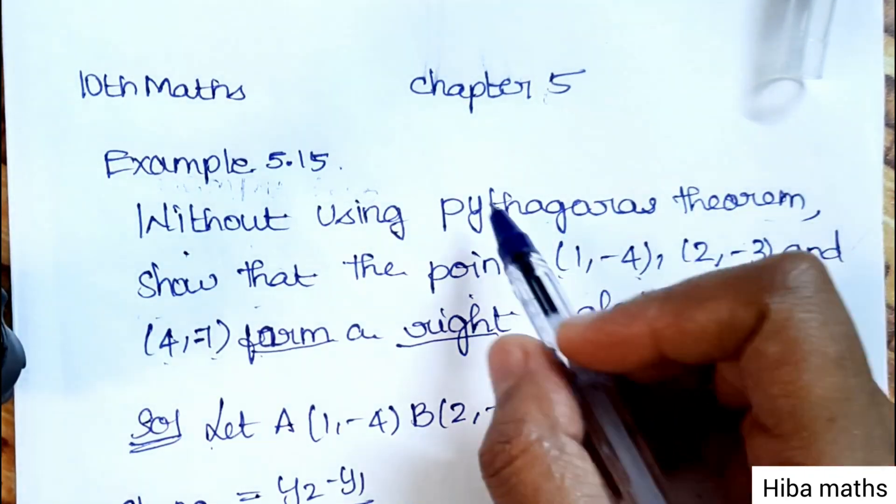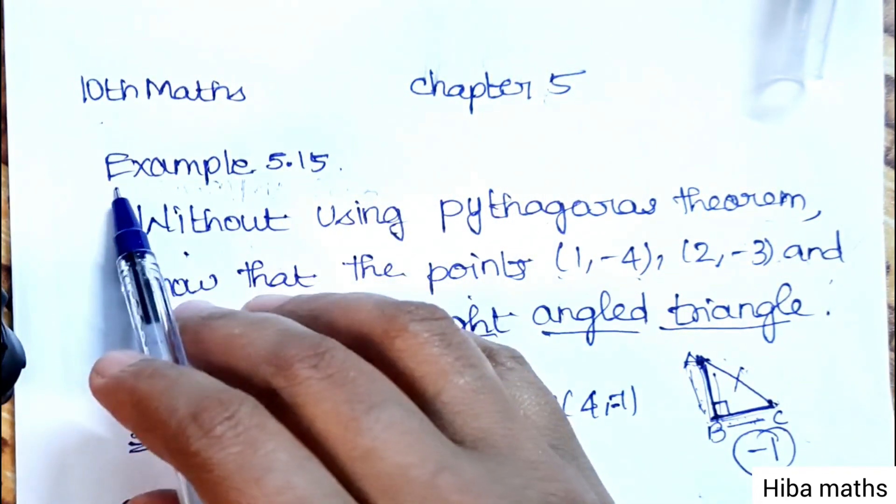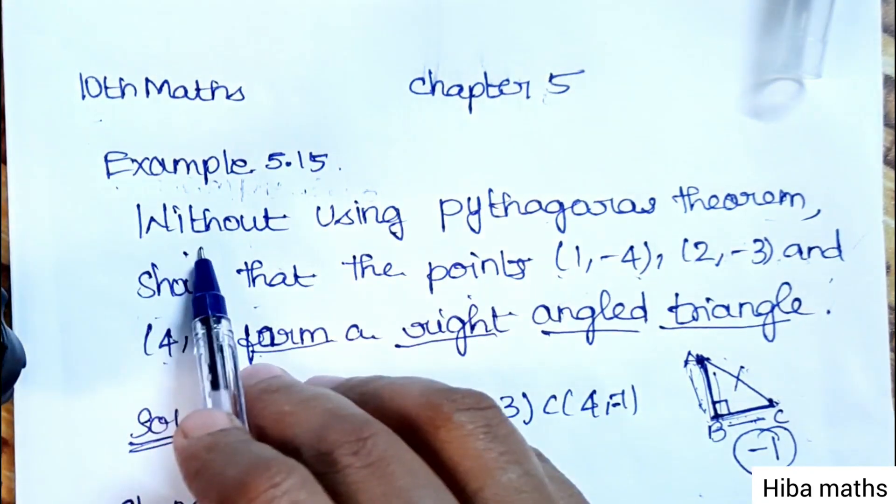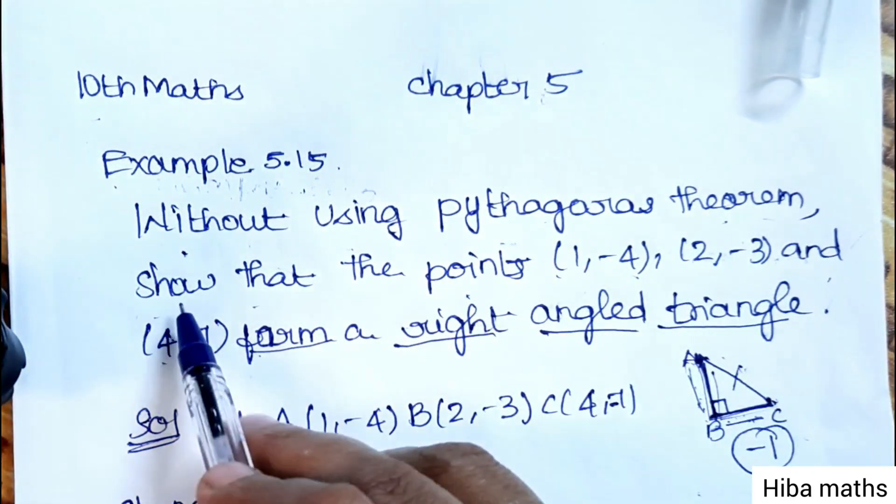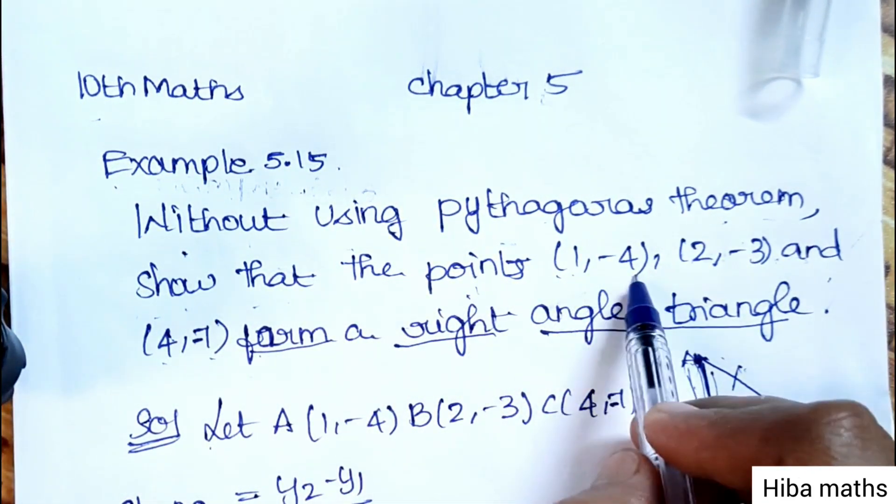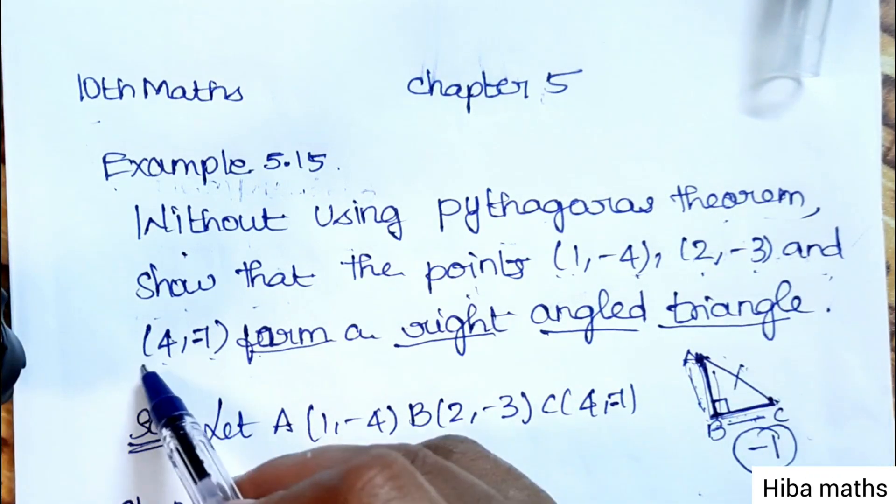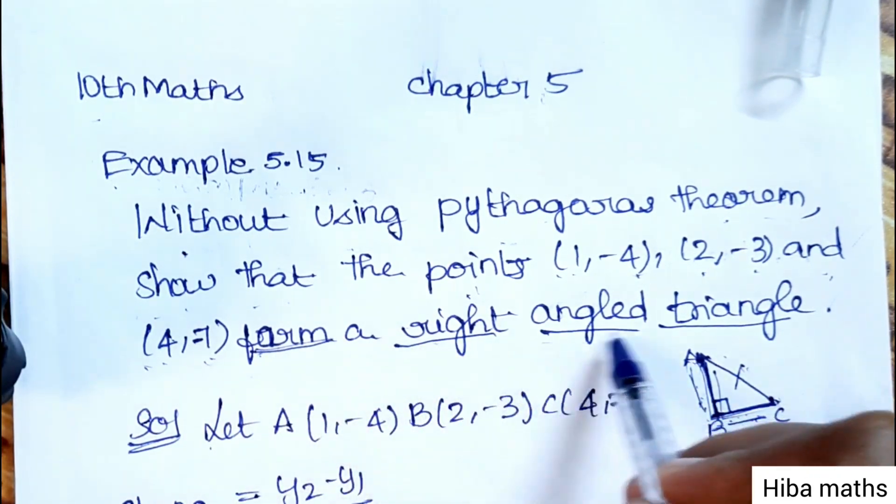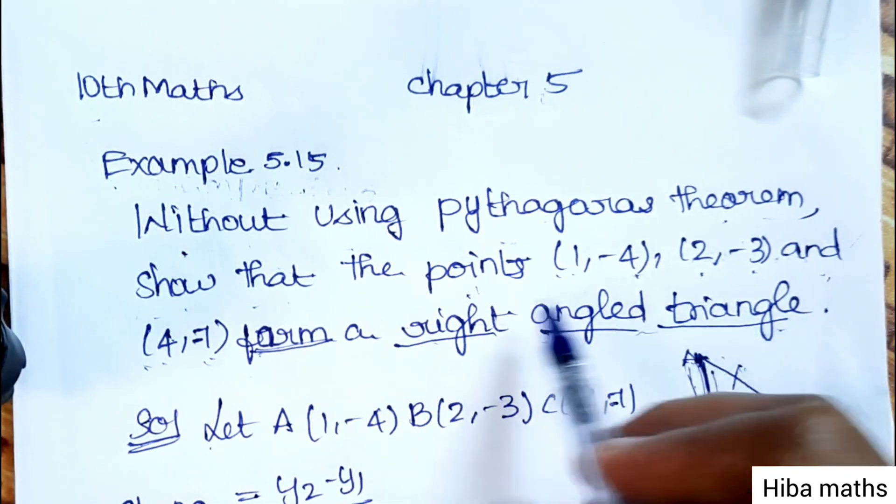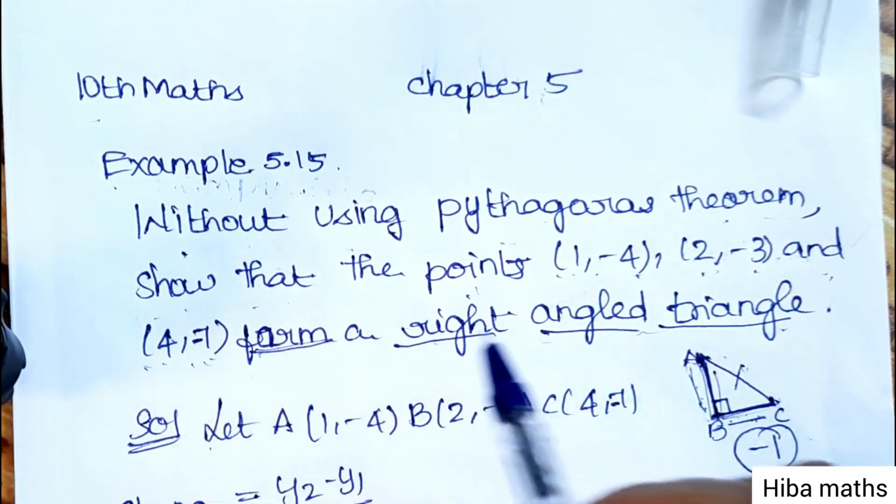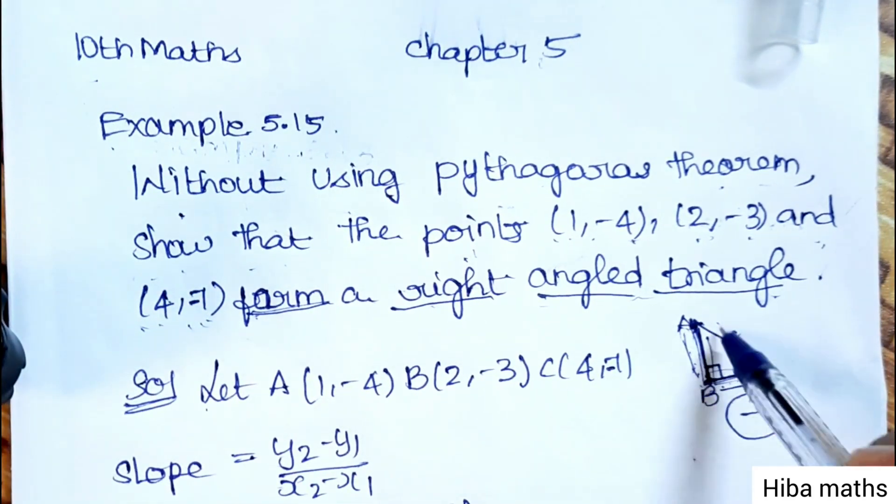Hello students, welcome to Hiba Maths, 10th standard maths, chapter 5, example 5.15. Without using Pythagoras theorem, show that the points (1,-4), (2,-3), and (4,7) form a right angled triangle. We have 3 points and the 3 points form a right angle triangle.